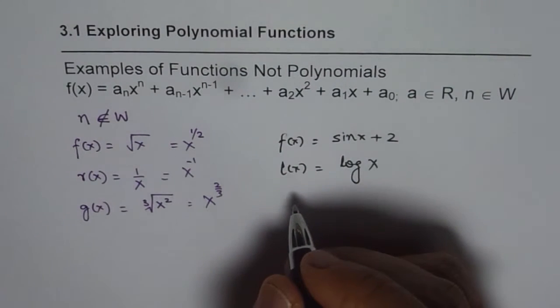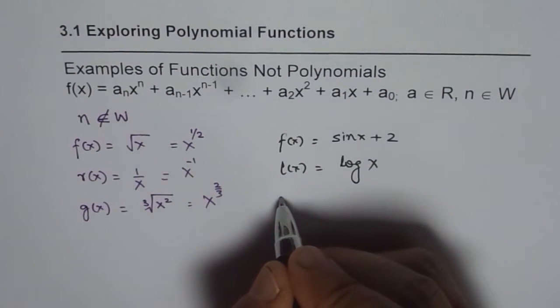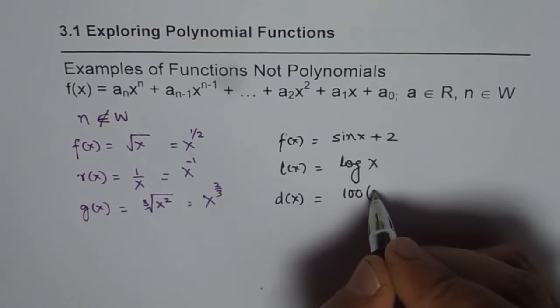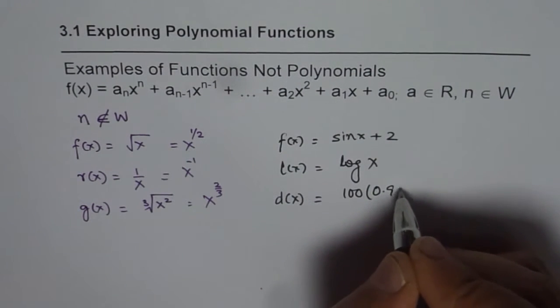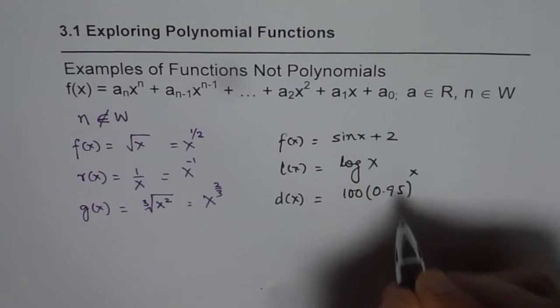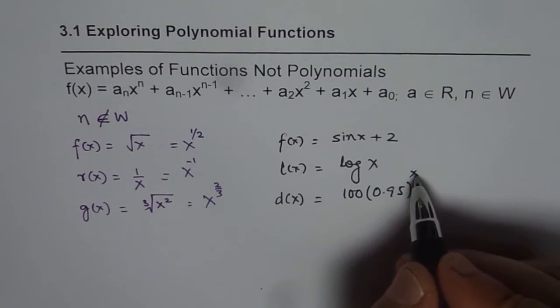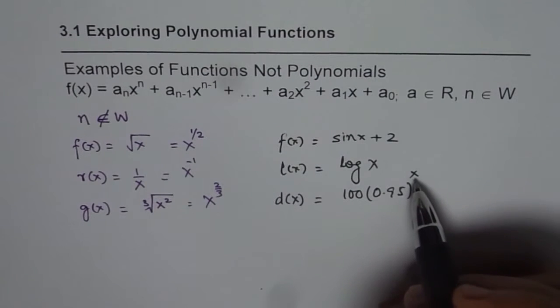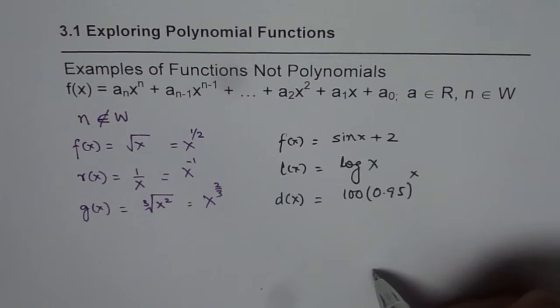We could have 2 to the power of x. Let us say we have a function, let me call this as, let us say decay function. So we have a function which is, let us say 100 times 0.95 to the power of x. Now here, the exponent is not a whole number. It is a variable. We cannot have variable as an exponent. So those are not polynomials.